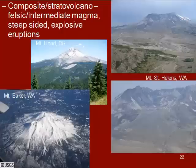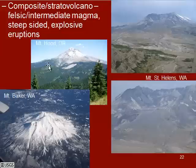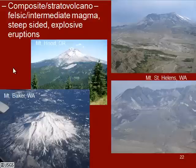Composite or stratovolcanoes have more felsic or intermediate magmas. This is what we have in our neck of the woods. These are very steep-sided volcanoes — the typical volcano shape that people think of. These volcanoes are very dangerous and highly explosive, because of the type of magma present. We have highly viscous magmas that have a hard time reaching the surface; pressure builds up, and then we have this huge explosion.